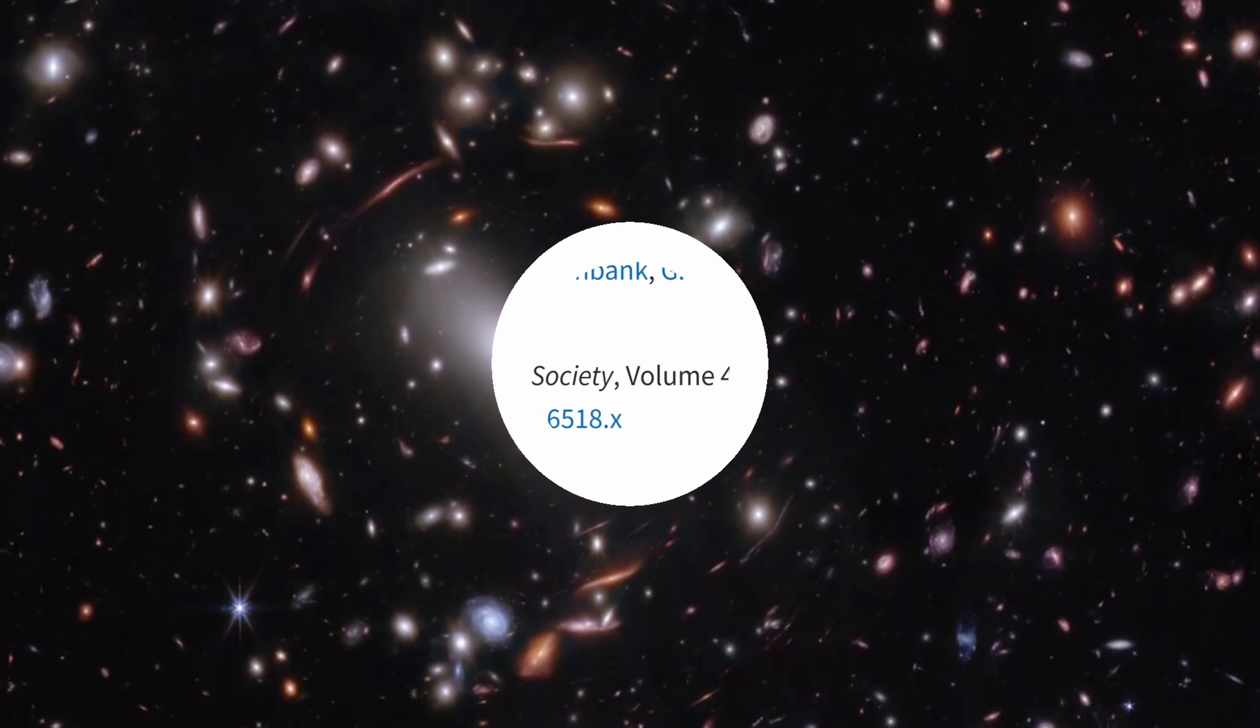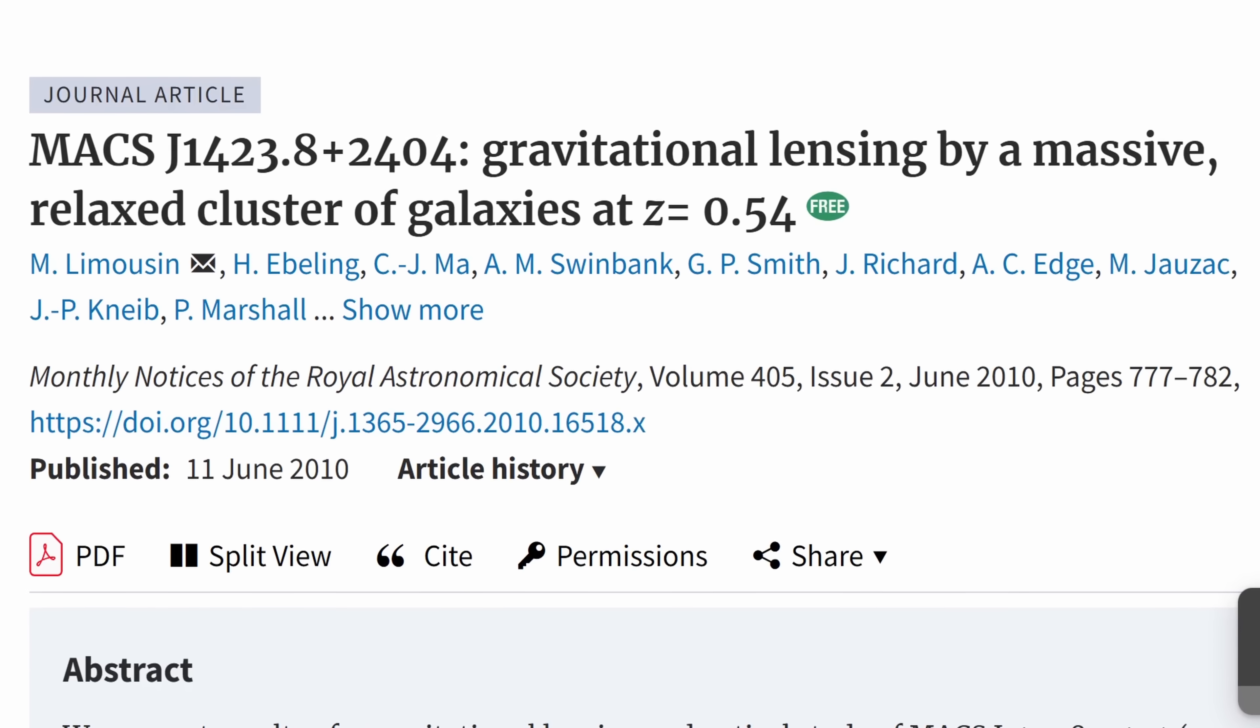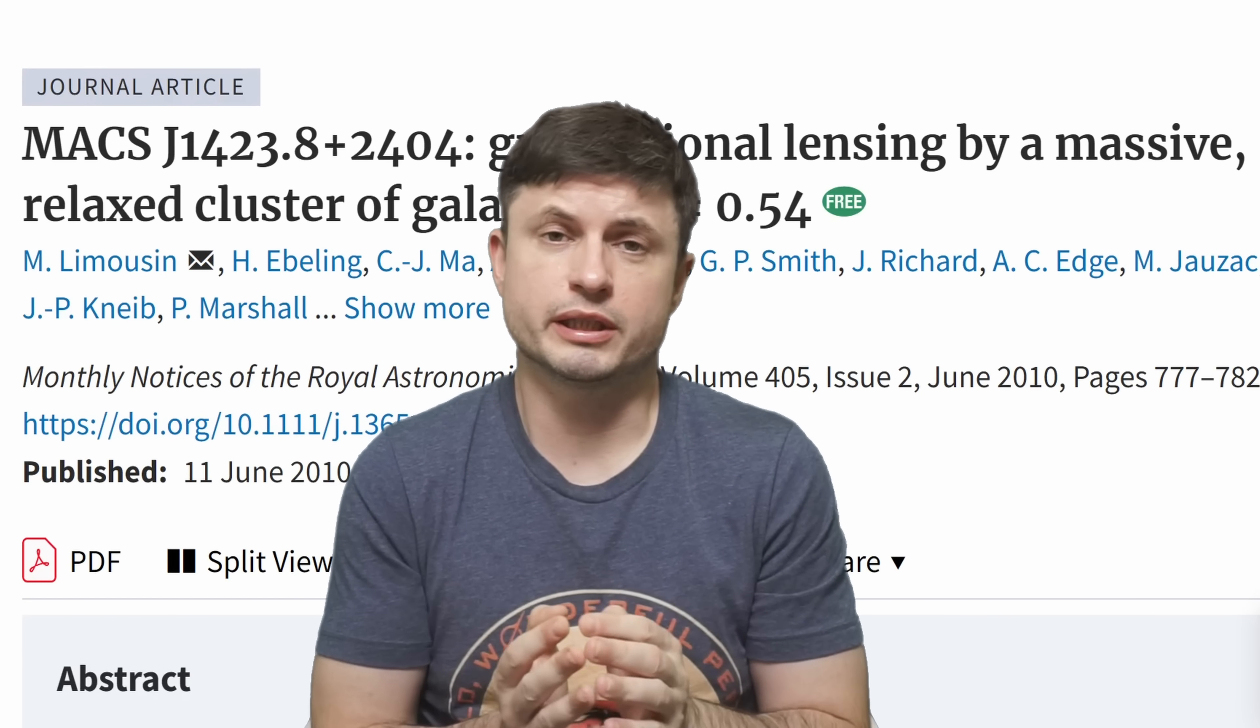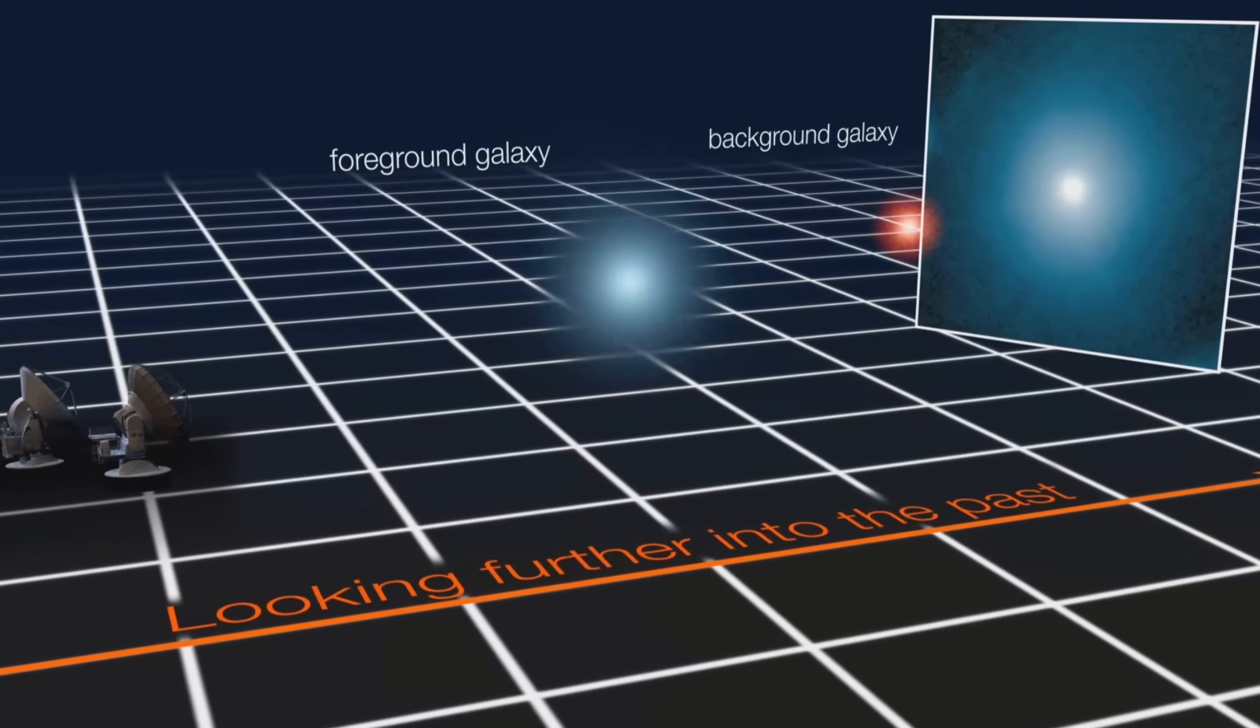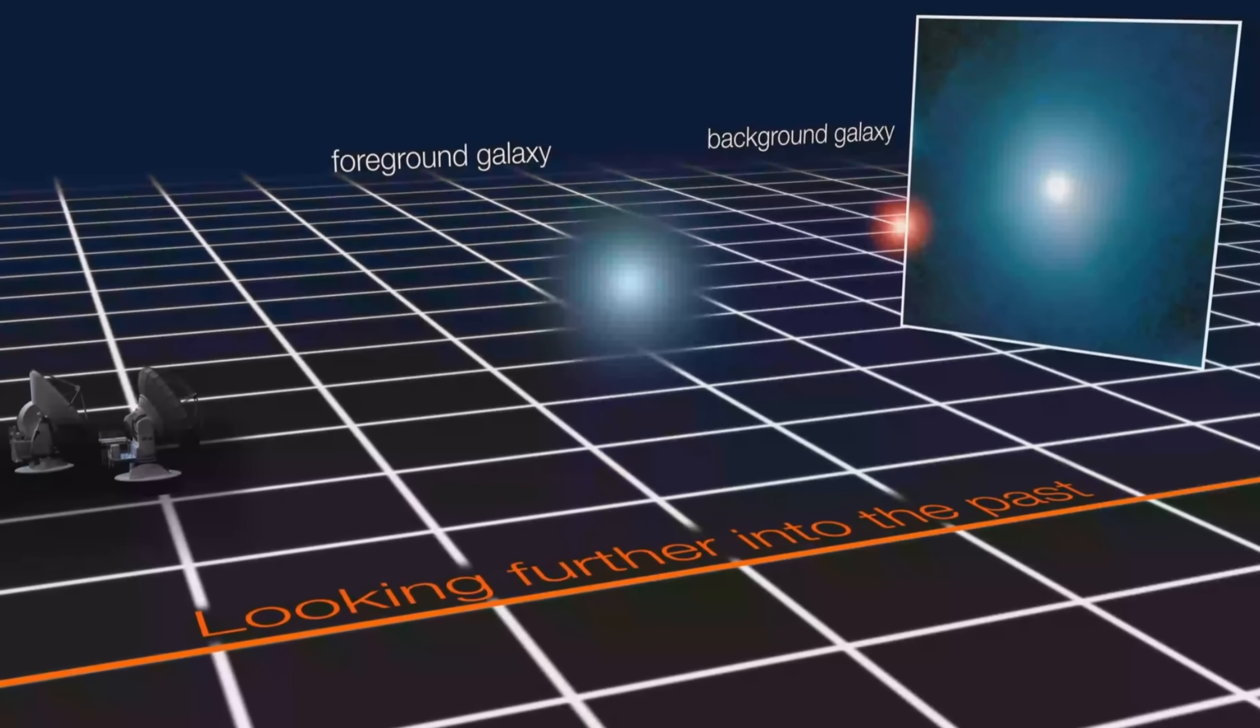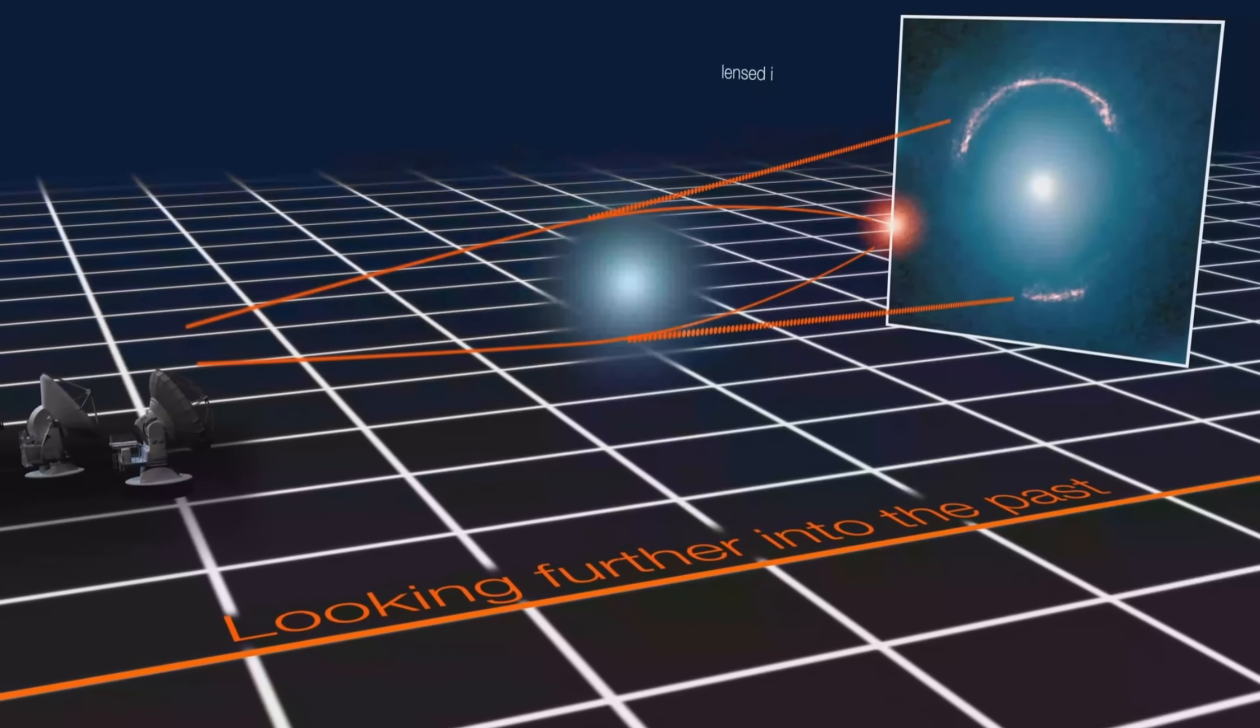MACS J1423, a really massive galactic cluster at a distance of 6.6 billion light years away from us that's essentially so massive that it produces an extremely powerful gravitational lens. And it was actually discovered and analyzed over a decade ago. Due to these very powerful gravitational lensing effects, quite a lot of distant light becomes amplified, and in some cases by thousands of times.